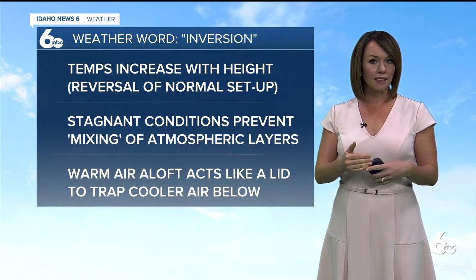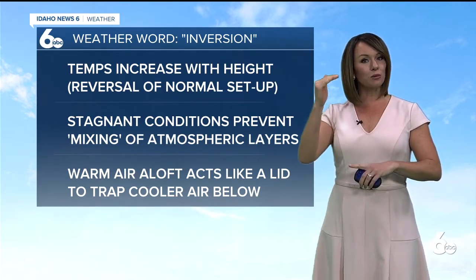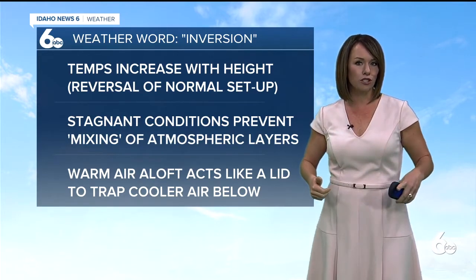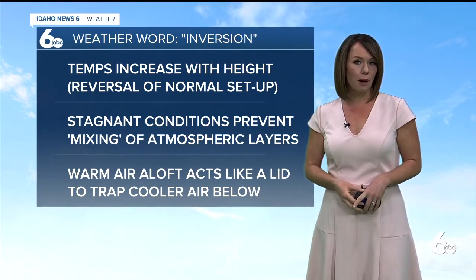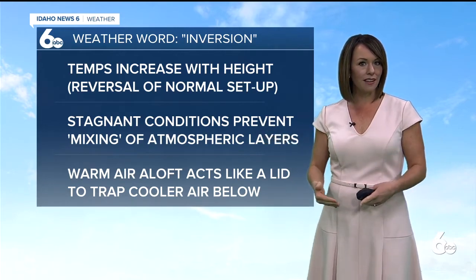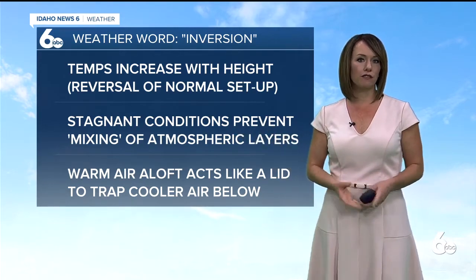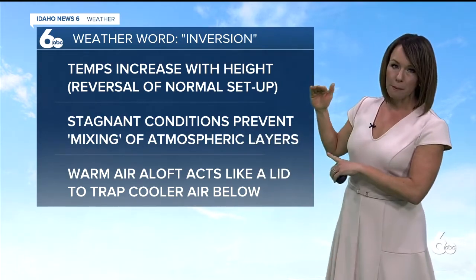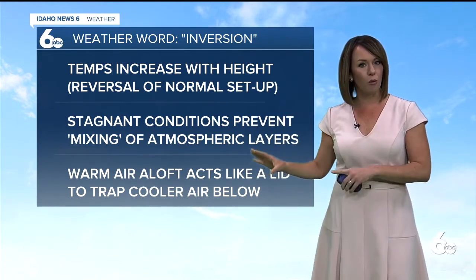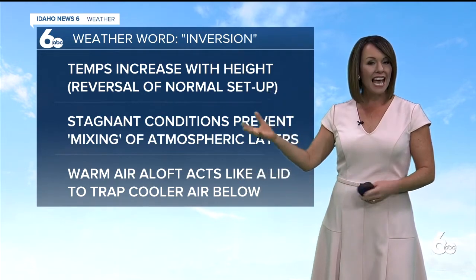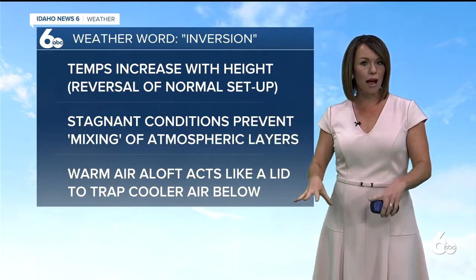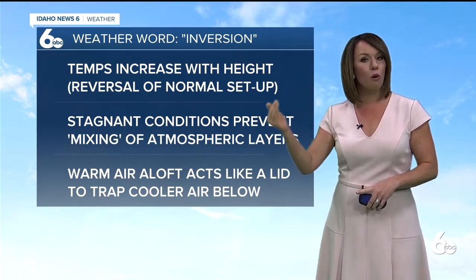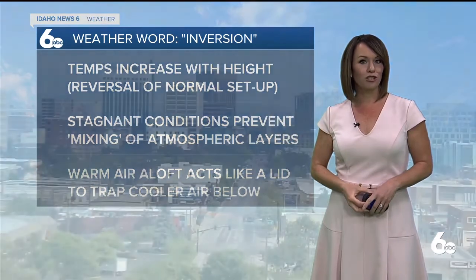So an inversion at its most basic means temperatures increase with height. It's a reversal — an inversion — of the normal atmospheric setup, where of course you get cooler as you climb up in height. That's why our mountains see cooler temperatures than the valleys. But this is not the case with an inversion. We get stagnant conditions at the surface, really preventing the mixing of those atmospheric layers, so that warm air aloft acts like a lid to trap the cooler air below. So we start seeing mountain temperatures rivaling, sometimes even warmer than, those of the Treasure Valley.